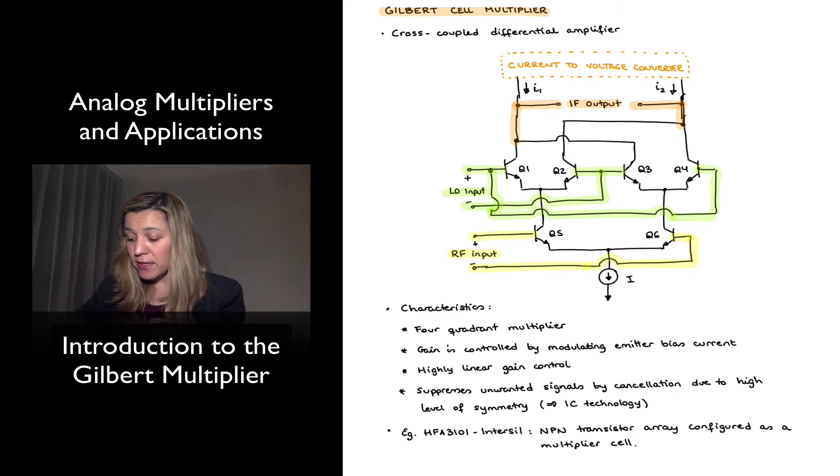In this circuit, the gain is controlled by modulating the emitter bias currents, as we have mentioned. And the gain control is very linear, as opposed to, again, the log-antilog type of multiplier we just saw, where we are relying on the operation of a nonlinear circuit, a circuit which contains nonlinear elements. In this case, the transistors, even though their characteristic is nonlinear, they are all operating in their linear region.